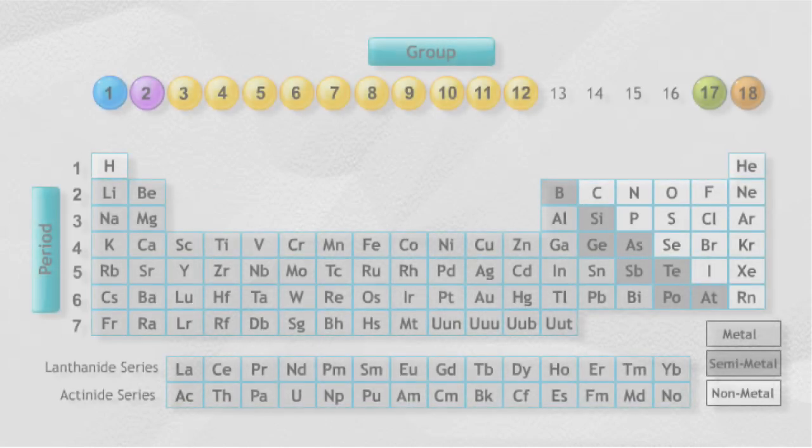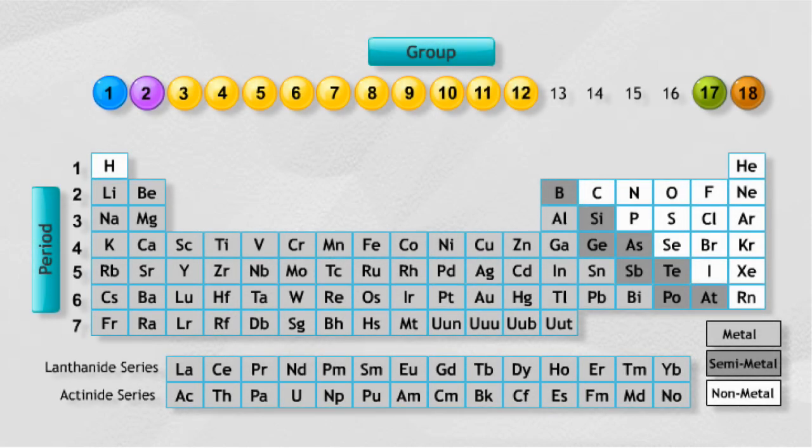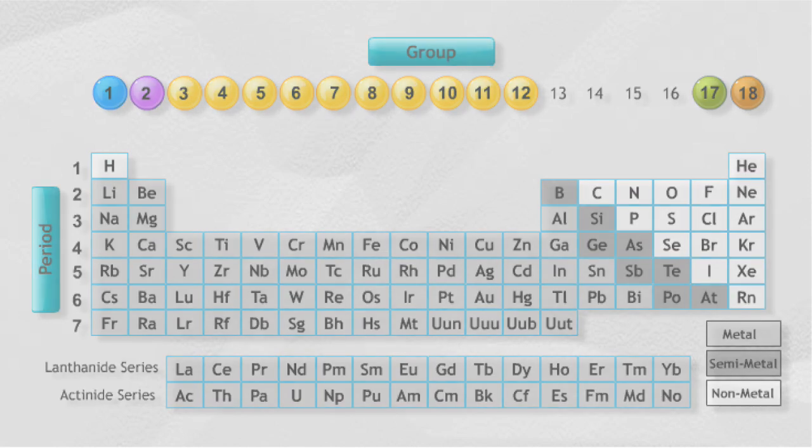Elements are arranged orderly and systematically in the periodic table. It is a tabular arrangement of all the known chemical elements according to their structural properties. Elements with similar characteristics are grouped together in the periodic table.